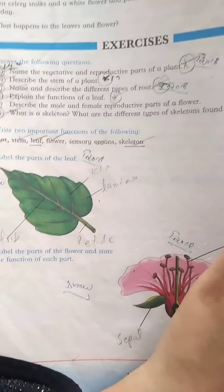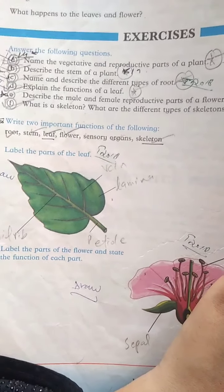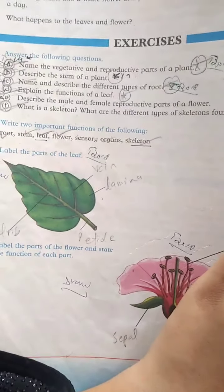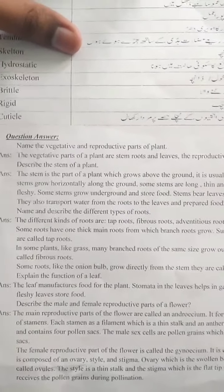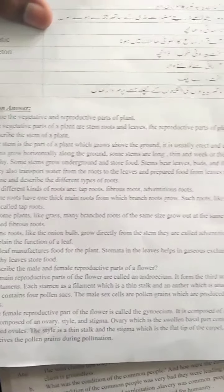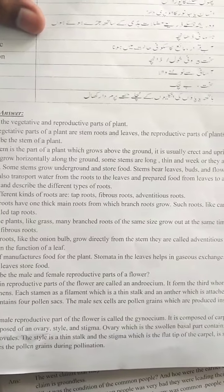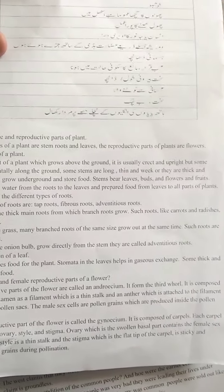These are the exercises. Name the vegetative and reproductive parts of a plant. These are the questions which you can do in your copy and register. Question 1: Name the vegetative and reproductive parts of plants. The answer is: the vegetative parts of a plant are stem, roots, and leaves. The reproductive parts of plants are flowers.